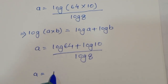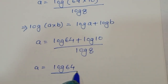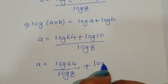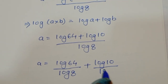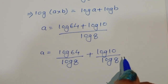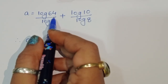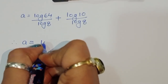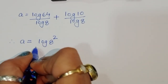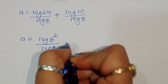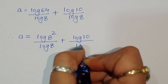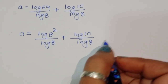We split this as: a equals log of 64 divided by log of 8, plus log of 10 divided by log of 8. Now 64 can be written as 8 squared, so log of 64 becomes log of 8 squared.